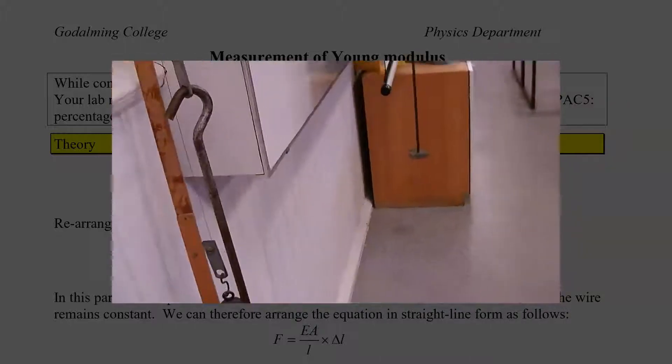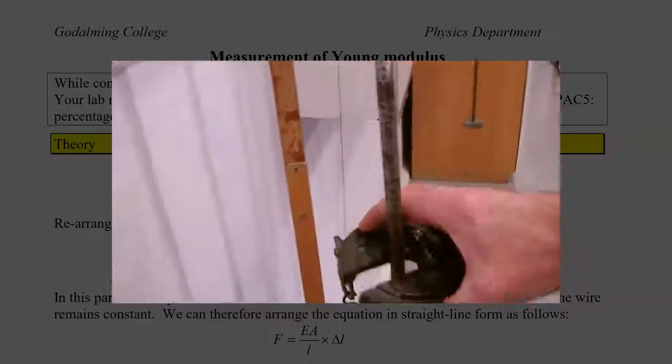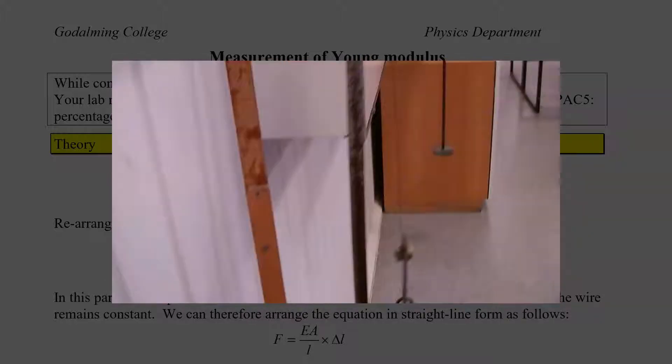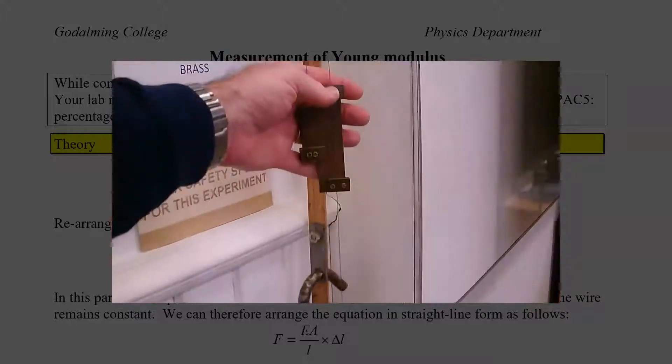There is a test mass just to keep one taut and another has a mass hanger. The basic idea is you are going to add half kilo masses on, making sure it doesn't get twisted.